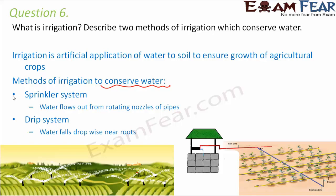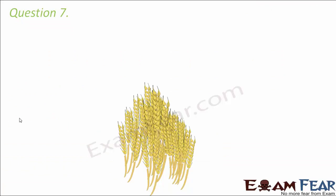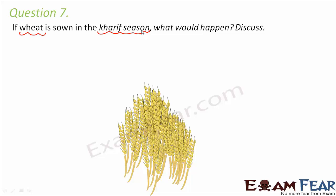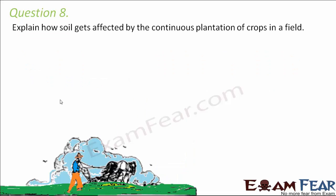Question number seven: if wheat is sown in the kharif season, what would happen? Wheat is a rabi crop that needs moderate temperature and limited irrigation for good growth. In the kharif season there is heavy rainfall, which would lead to water logging. Water logging would adversely affect the wheat productivity, drastically reducing the crop yield.